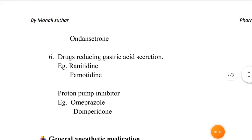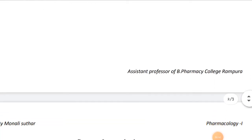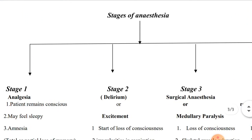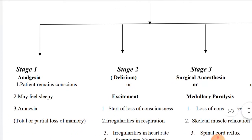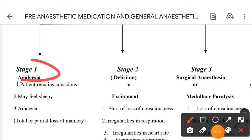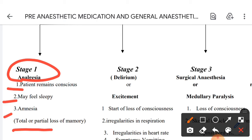Now the next topic is the stages of anesthesia. When anesthesia is given, the first stage is the stage of analgesia. In this stage, the patient remains conscious, may feel sleepy, and experiences amnesia — meaning total or partial loss of memory.